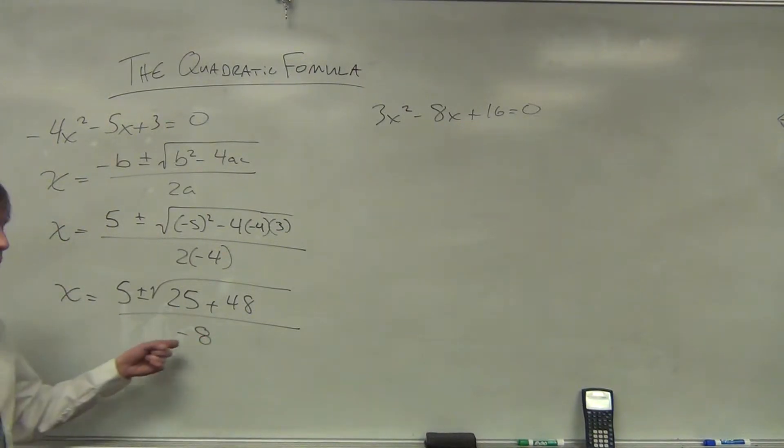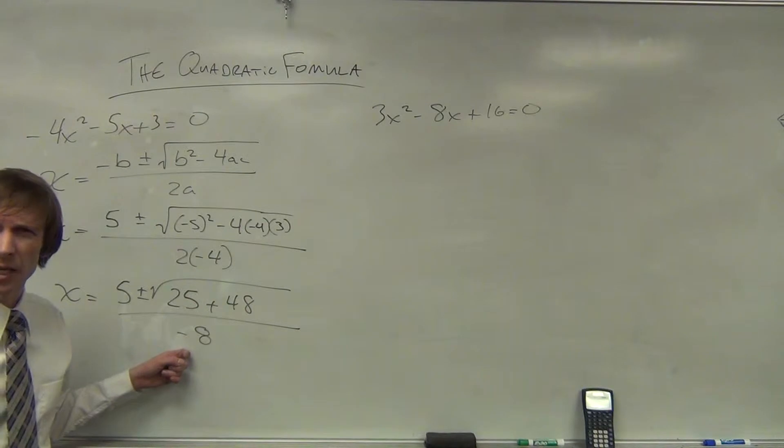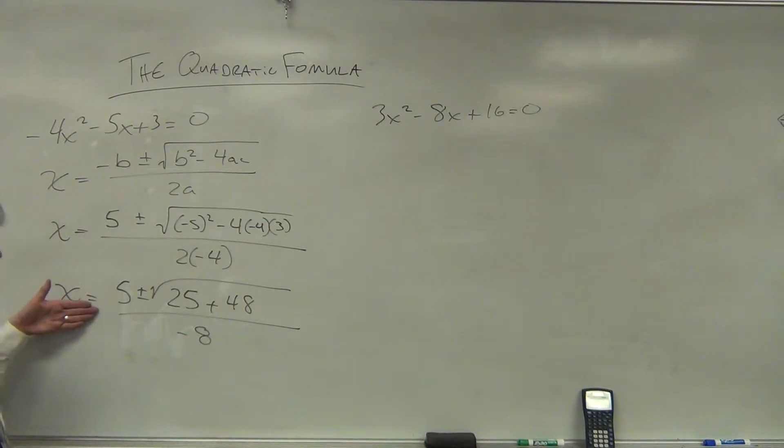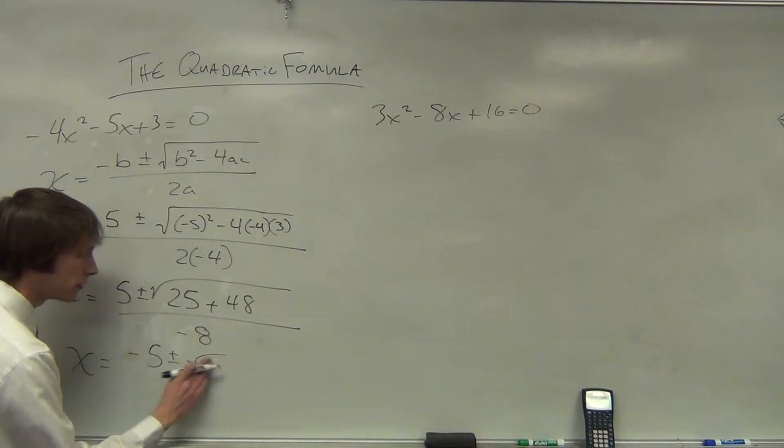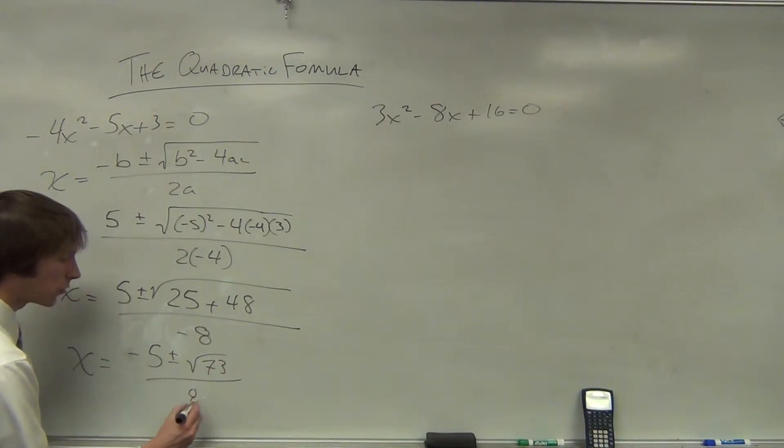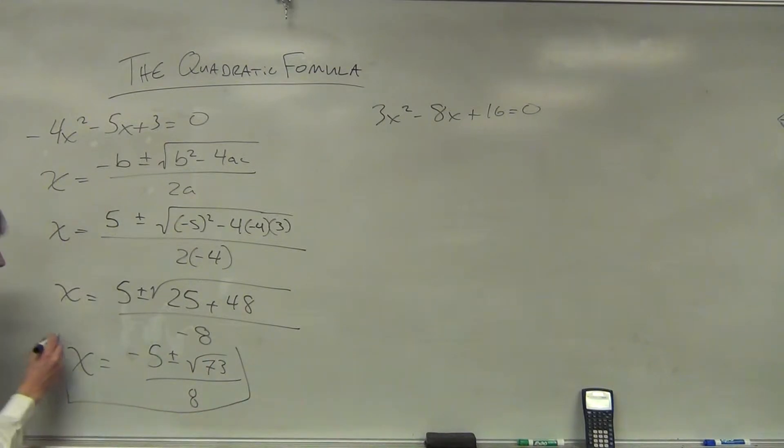Now, we're not supposed to have a negative in the denominator. So a negative fraction here is what we're really going to have. x is equal to the opposite of 5 plus or minus the square root of 25 and 48 makes 73 all over 8. This is our solution.